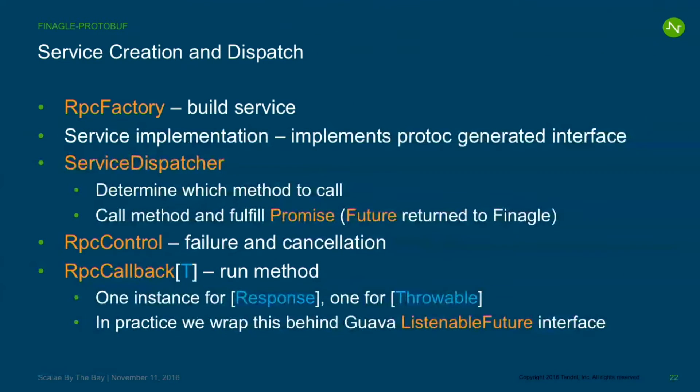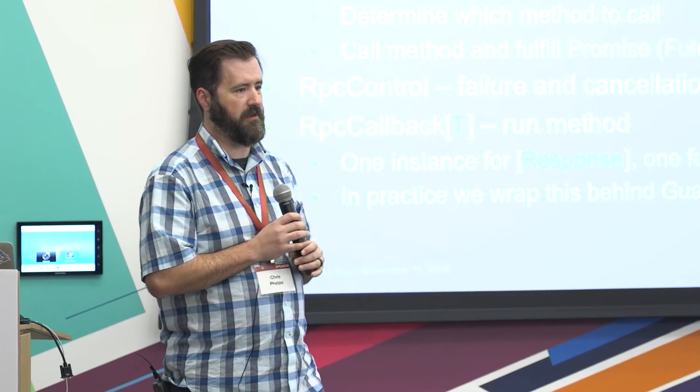RPC control and RPC callback come from Protobuf — interfaces that we've implemented. RPC control handles failure and cancellation; RPC callback handles the run method. In practice we have one implementation class that implements both interfaces.